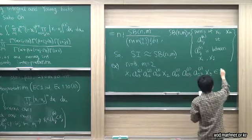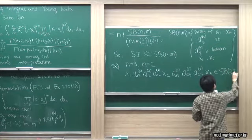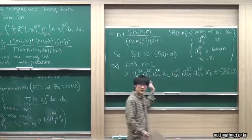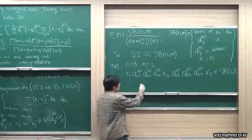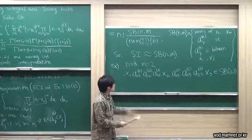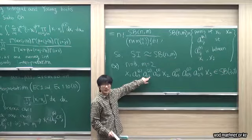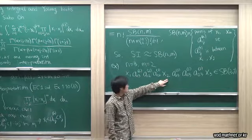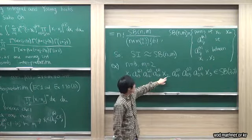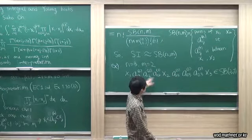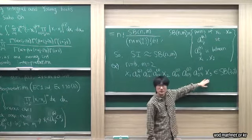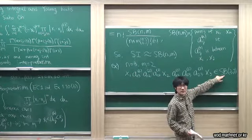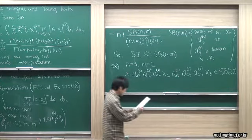Here is an example of a permutation in Sb(3, 2). We have x_1, x_2, x_3 in increasing order. For any a, say A_{1,2}, that means it lies between x_1 and x_2 — and indeed it does. Similarly A_{1,3} lies between x_1 and x_3, A_{2,3} lies between x_2 and x_3, and so on. Permutations of this form are those in this set.